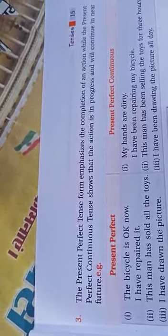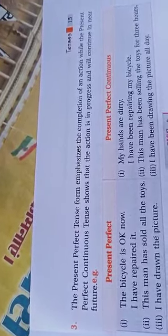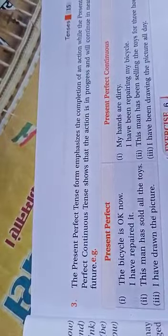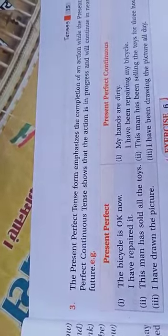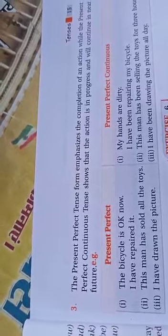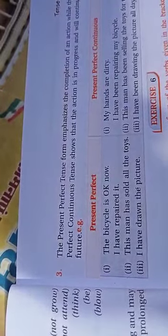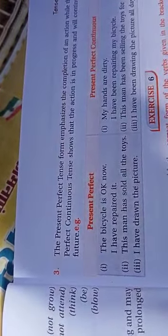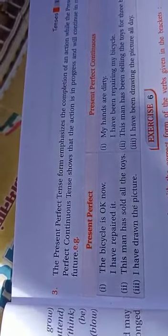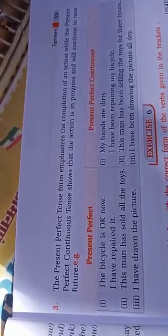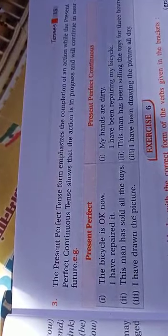Rule number three: the present perfect tense emphasizes the completion of an action, while the present perfect continuous tense shows the action is in progress and will continue in the near future. For example: 'The bicycle is okay now. I have repaired it.' — present perfect. 'My hands are dirty. I have been repairing my bicycle.' — present perfect continuous. 'This man has been selling the toys for three hours. I have been drawing the picture all day.'